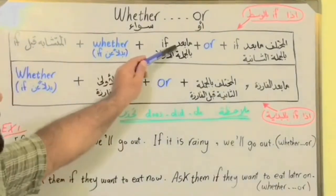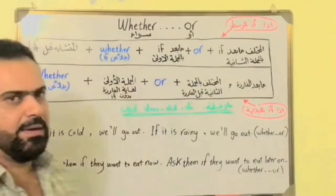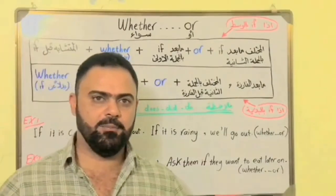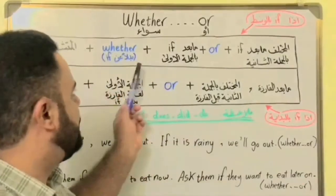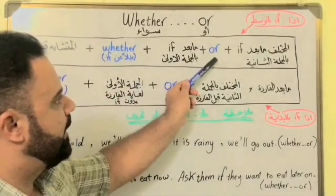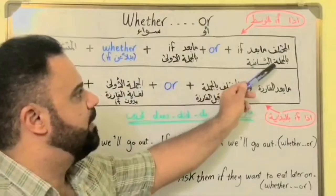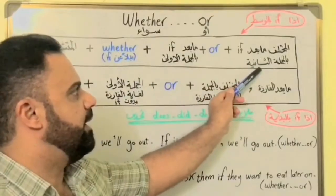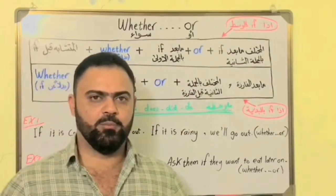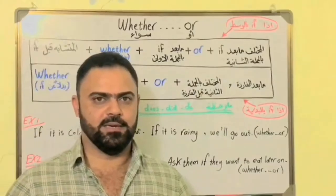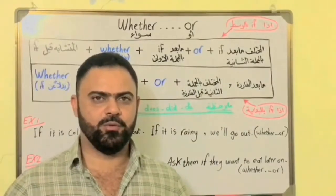ما بعد if بالجملة الأولى — احنا قلنا رح تجينا جملتين — اللي بعد if بالجملة الأولى نزله بعد whether، ثم or. والمختلف ما بعد if بالجملة الثانية — فقط المختلف أنزل، يعني المتشابه ما نزله.